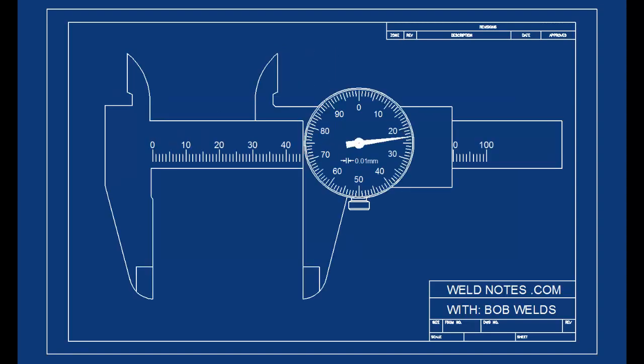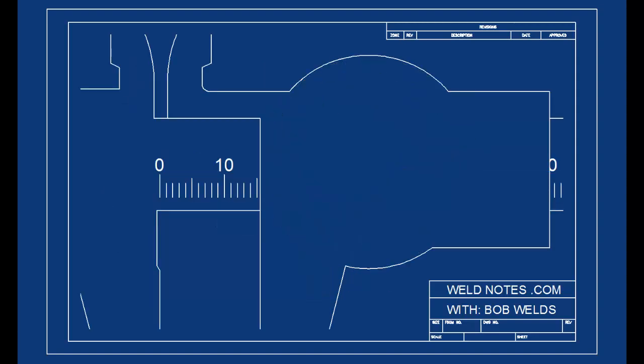You read the main scale here, along the edge of the sliding part of the calipers. This edge is called the reference edge. I'm going to take the dial off this caliper and let you look at the main scale by itself.